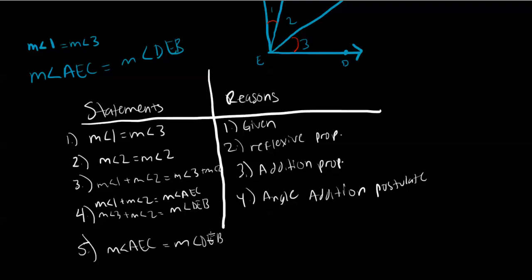As you can see, this is how you write a two-column proof. On one side you're solving the problem, and every step you write needs a reason — one of your properties or postulates. It really helps to have a good understanding of all your postulates and properties before you try to write proofs.